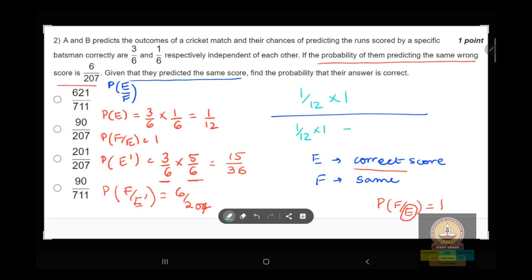Plus 15/36 times 6/207. Okay, let me erase all of this. We just have to calculate 1 upon 1 plus 30/207.